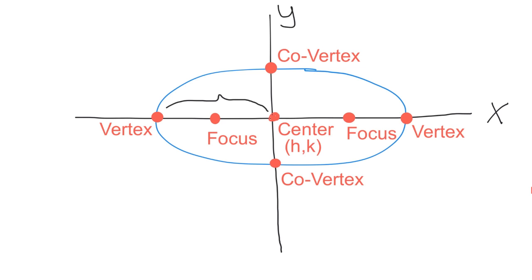The distance from the center to one of the vertexes is A. The distance from the center to one of the co-vertexes is B. The distance from the center to one of the focus points is C. And C squared equals A squared minus B squared. Remember, the center is at the coordinates H, K.